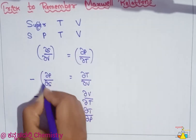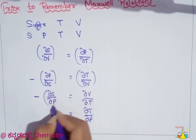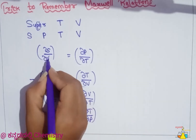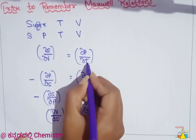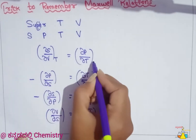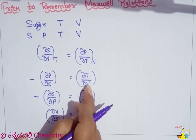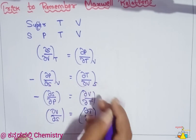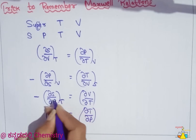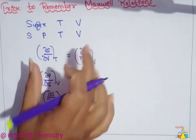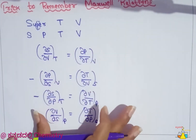At constant temperature, pressure is zero. Here is a trick: the denominator written in the denominator. It will be T here — T in the denominator. It will be P here — P in the denominator. Next, it will be P, here S in the denominator. So these are the 4 Maxwell relationships.